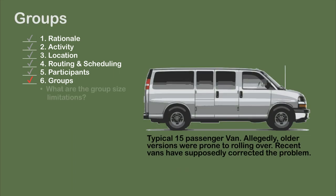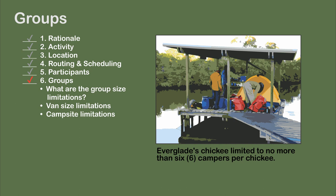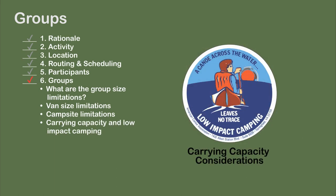The group is the sum of the participants and staff. Often there are practical external constraints on the size of the group. Van size may be a limiting factor — many agencies have limited 15-passenger vans to 10 passengers. With two leaders, that leaves eight participants. Many resource managers have campsite limitations to help protect the resource, and there are ethical considerations including the carrying capacity of the resource and group size.